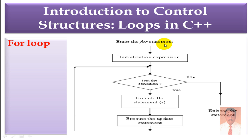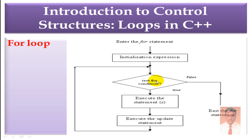To summarize the For Loop flow: enter the For Loop, first the Initialization Expression, then it will go to Test the Condition. If the Condition is True, it will execute the Statement and then the Update Statement, and again go back to Test the Condition. The loop continues until the Condition is False, at which point it exits the For Statement.